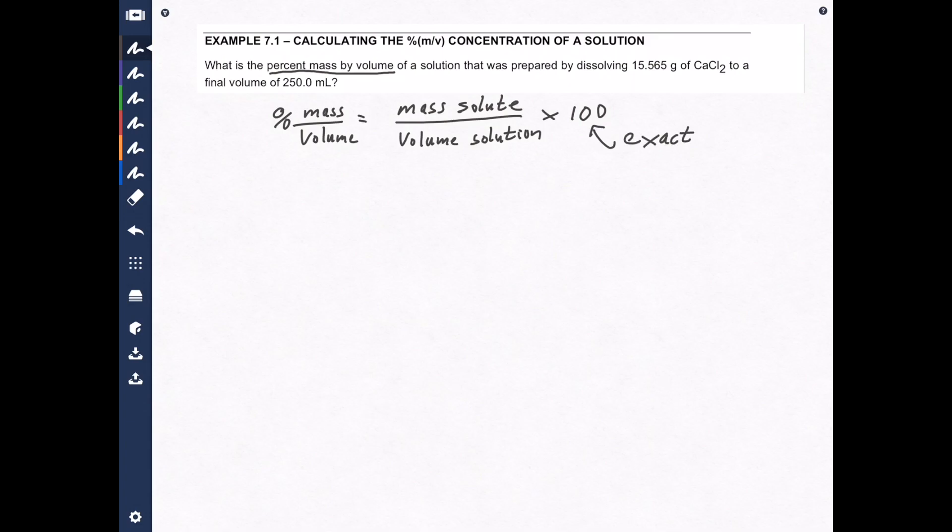Why is it exact? Because it's a percentage. Percentages are defined to be out of 100, so it has to be an exact number. Now, this number here and this number here are going to be measurements, so we're going to have to round using those.